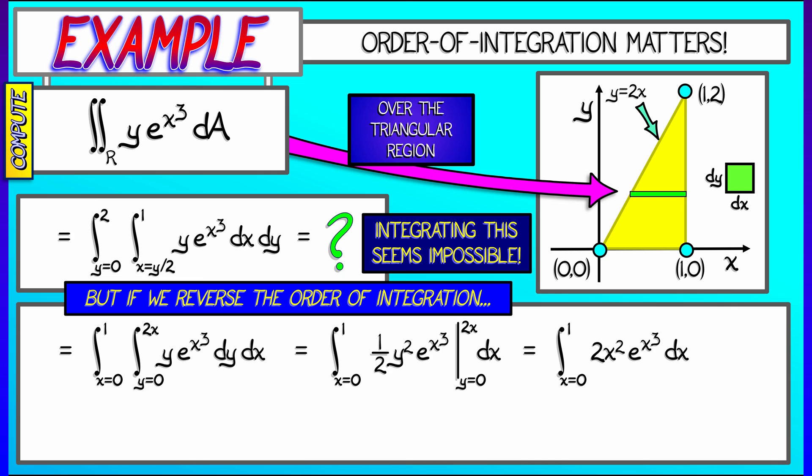Aha, I see what has happened. I can do a simple u substitution, letting u be equal to x cubed. Then du is 3x squared dx. And voila, I have the integral, as u goes from 0 to 1, of 2 thirds e to the u, du.